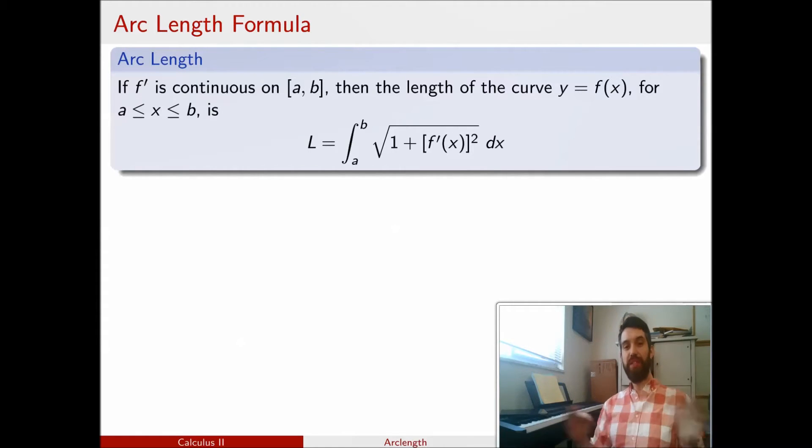So if I have some curve expressed by a function, y equals f of x, and I have some domain where I'm considering it, x is bounded between a and bounded between b, then the length of that curve, or the arc length, is given by this integral of this weird thing here, this square root of 1 plus the derivative squared.